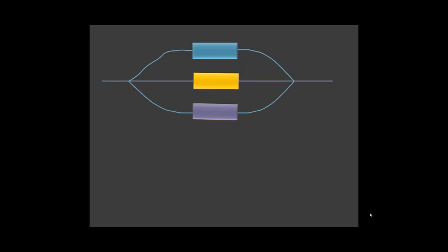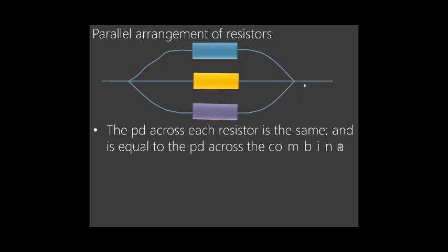The other arrangement is the parallel arrangement. For parallel arrangement, all resistors are connected between the same two points. Key points to note: the PD across each resistor is the same and is equal to the PD across the combination. So the PD across resistor 1, resistor 2, and resistor 3 are all equal to the PD across the whole combination.